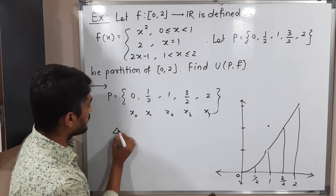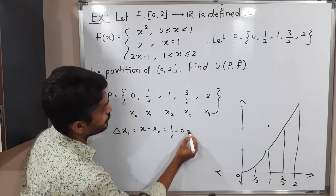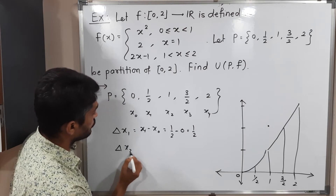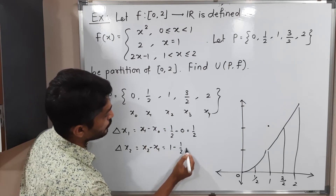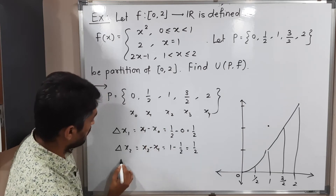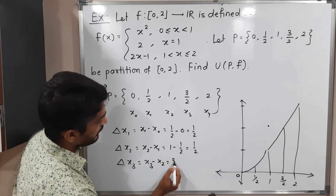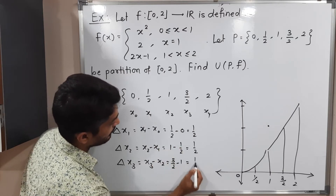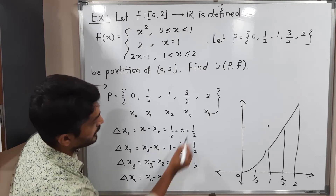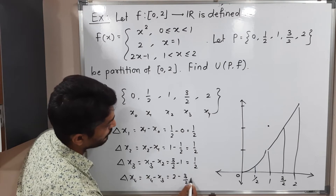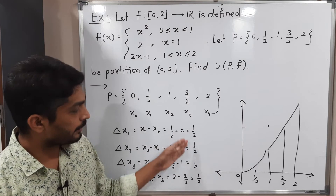Δx₁ = x₁ − x₀ = 1/2 − 0 = 1/2. Δx₂ = x₂ − x₁ = 1 − 1/2 = 1/2. Δx₃ = x₃ − x₂ = 3/2 − 1 = 1/2. Δx₄ = x₄ − x₃ = 2 − 3/2 = 1/2. So all Δxᵢ are equal to 1/2.